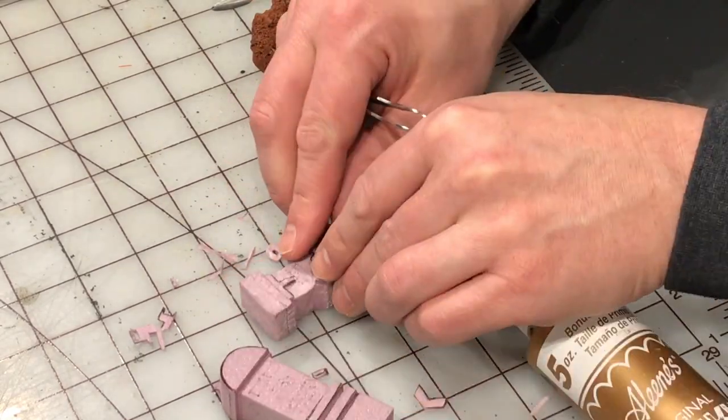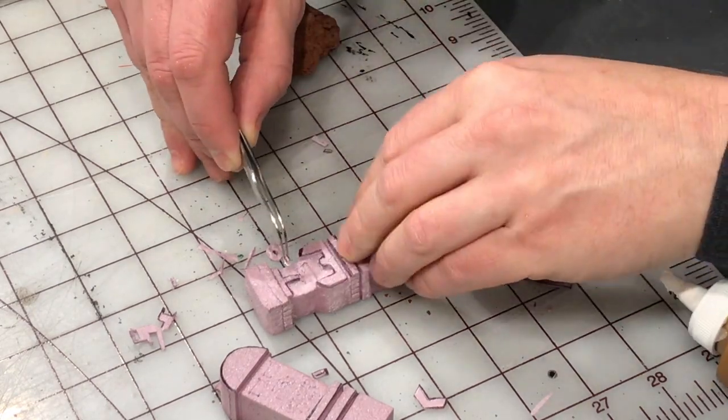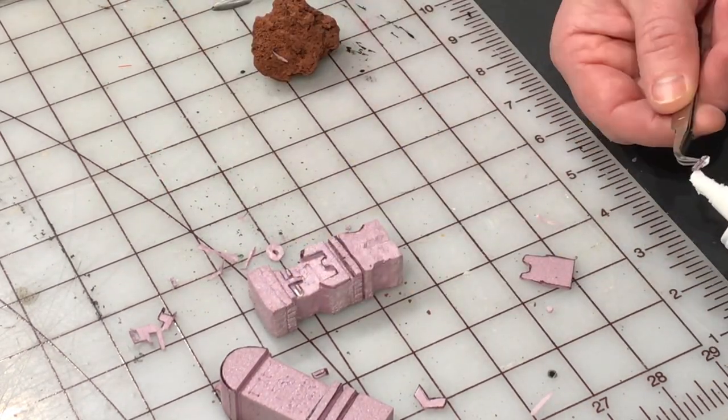Now I'm using tacky glue to attach those loose bits of styrofoam that we had cut out vertically earlier.